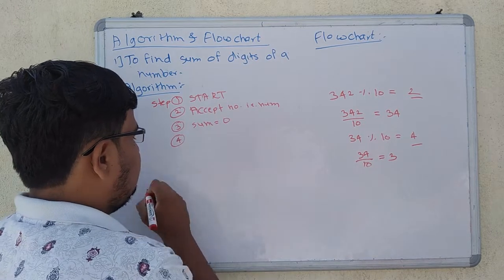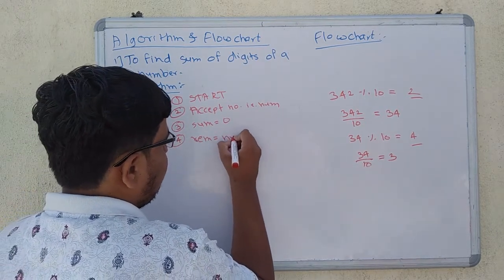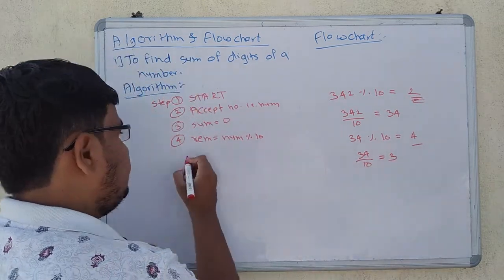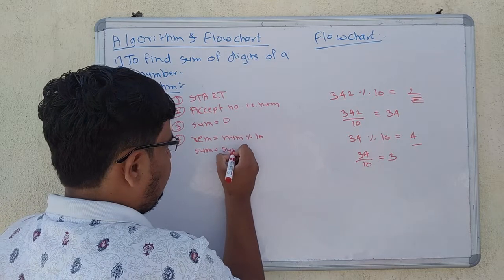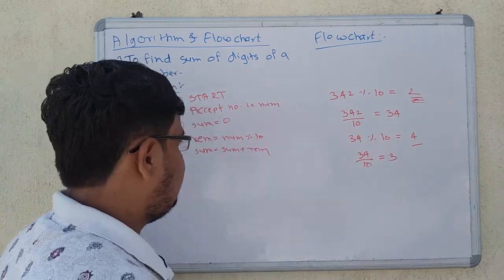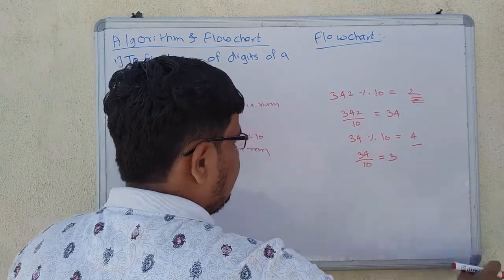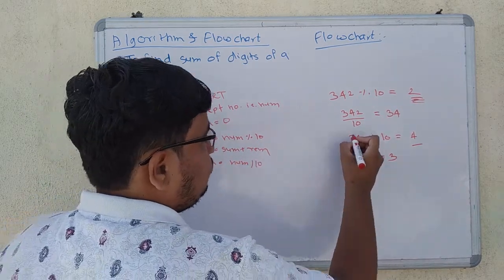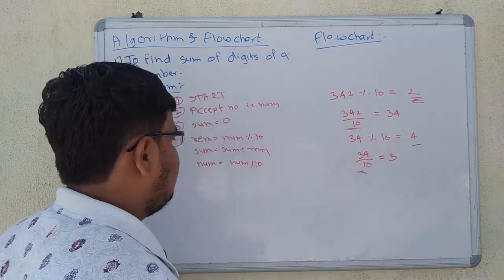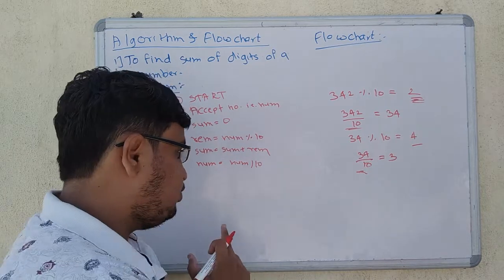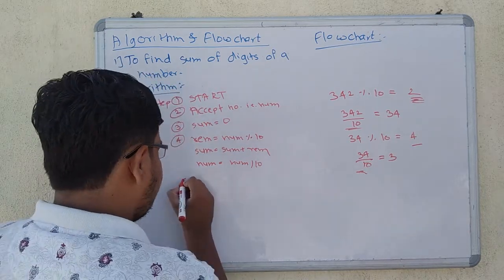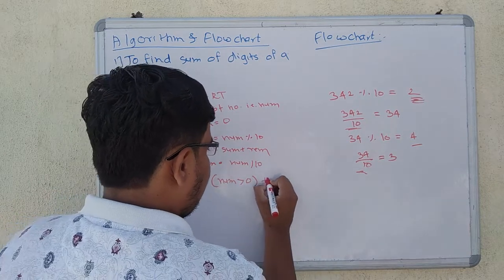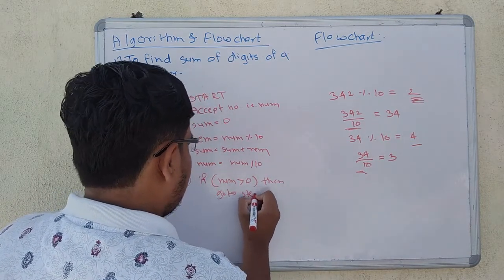Step 4 is: remainder is equal to num mod 10. Then, sum is equal to sum plus remainder. Next, num is equal to num divided by 10. Step 5 is: check if num is greater than 0. If yes, go to step 4.